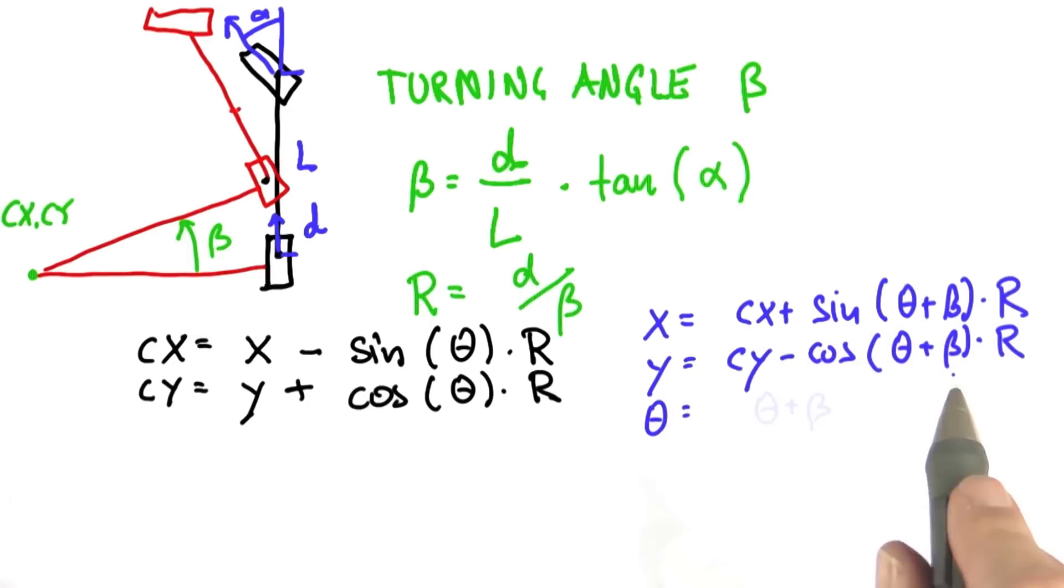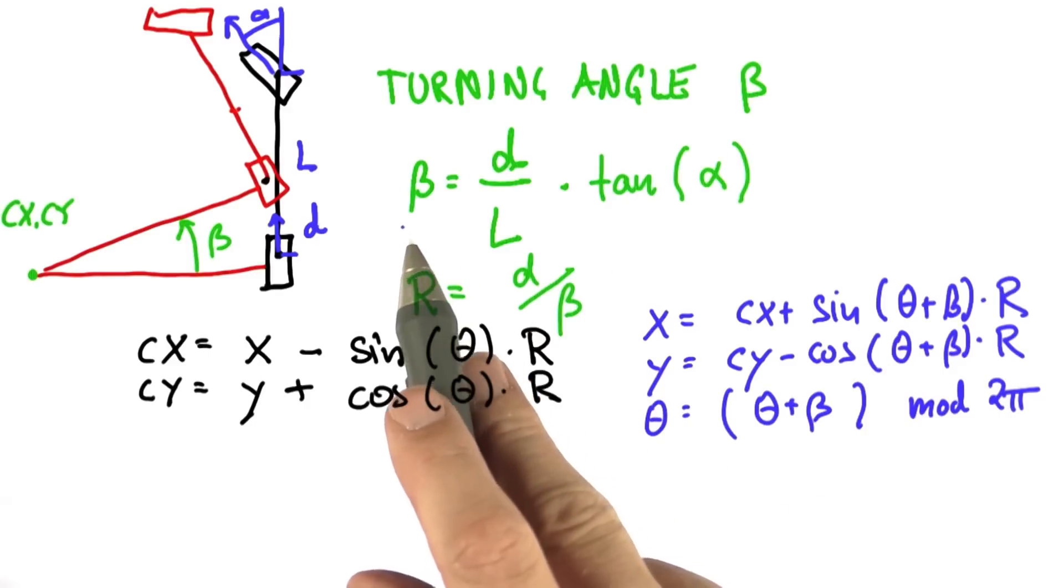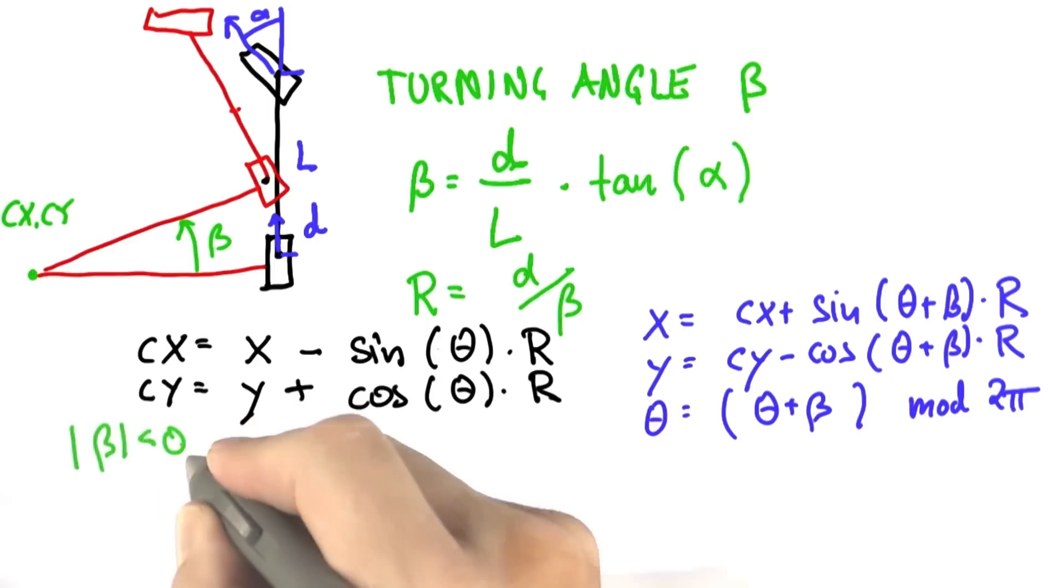Same with y, and the orientation is just increased by beta modulo 2pi. Now this all works if the robot is actually turning. If the robot were to go straight, then r would become infinity by this division over here. So for small betas, you might call this smaller than 0.001, we can approximate this all as straight motion.